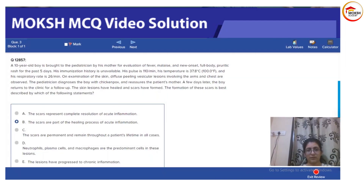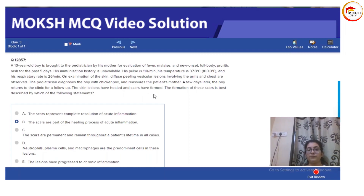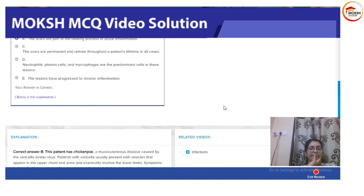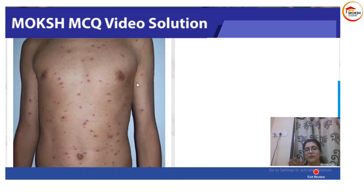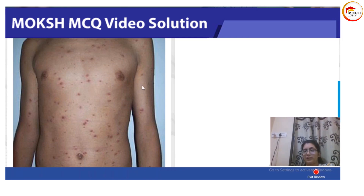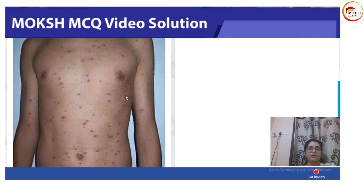This is a long clinical vignette, but at the end it tells us the boy has chicken pox and has come back with his mother after a few days with some scars. So what do these scars represent? In an exam, instead of describing scars in words, they might show you a photo of healing chicken pox and ask what stage of inflammation is occurring. This is how those healing scars look.